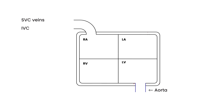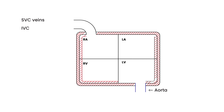In pericardial tamponade, you have an accumulation of blood inside the pericardial space. Eventually this blood expands and starts to compress the ventricles, making the ventricular volume smaller. As you can see, the chambers are getting smaller because of this fluid buildup.